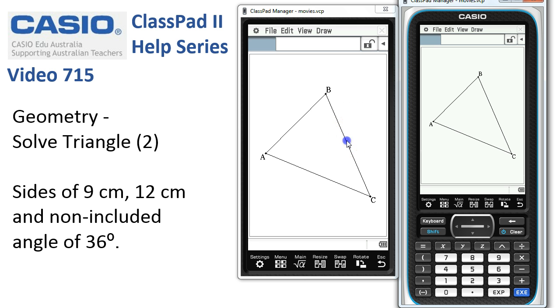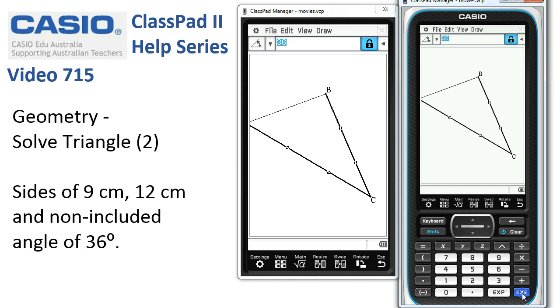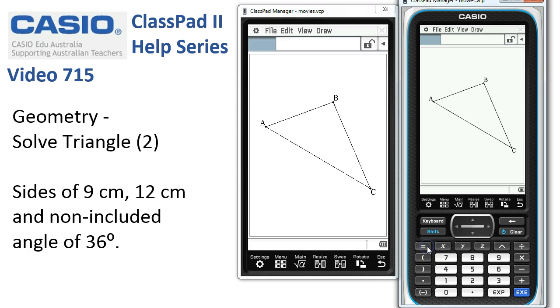Now the next thing is this angle at C is 36. This is the non-included angle. Remember we've set the lengths of AB to be 9 and BC to be 12. So this angle is going to be 36 degrees, so I tap in 36, tap execute to lock it in, and again I'll just tidy things up with an equals key.